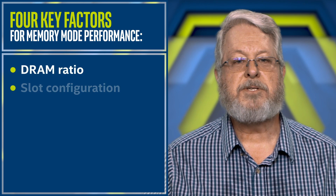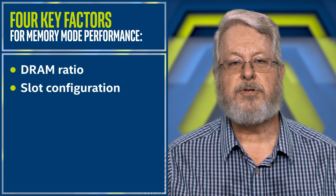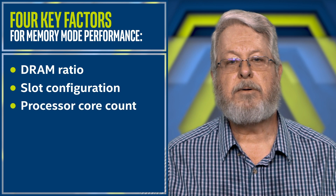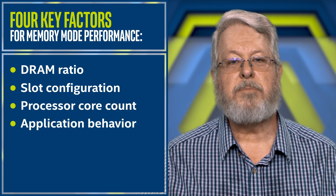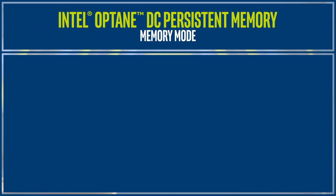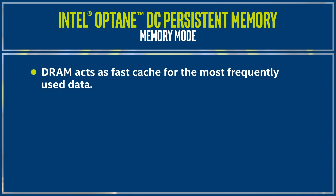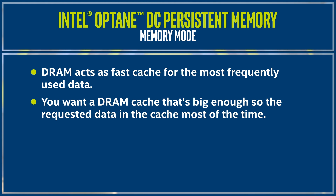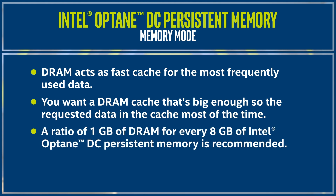Those four factors are: correct DRAM ratio, slot configuration, processor core count, and workload behavior. In Memory Mode, the DRAM acts as a fast cache for the most frequently used data. You want a DRAM cache that's big enough so the requested data is in the cache most of the time.